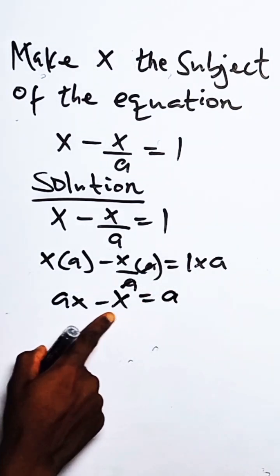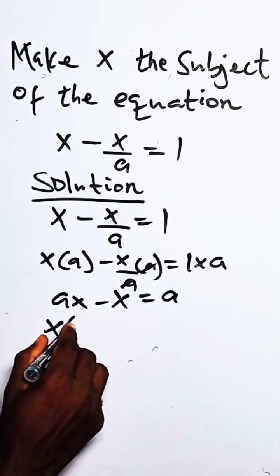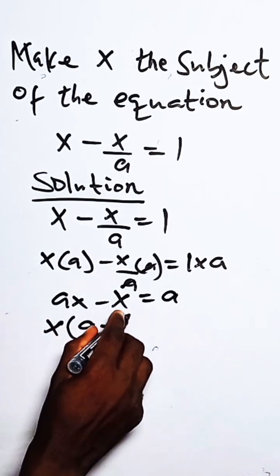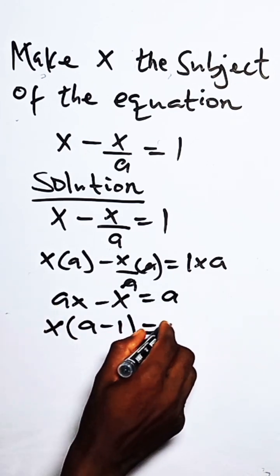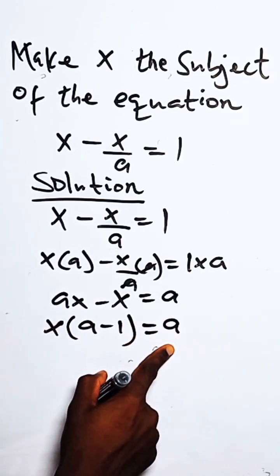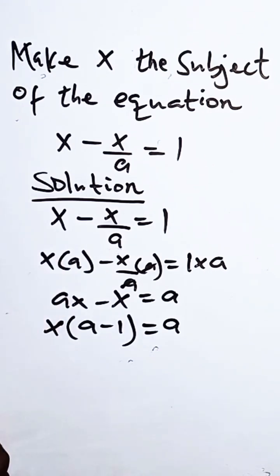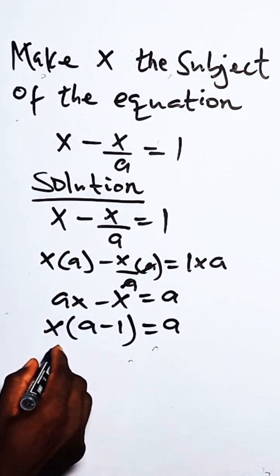factor out this side of the equation with x. So we have x into a minus one, which is equals a. We have to make x the subject of the equation, so what do we do? We have